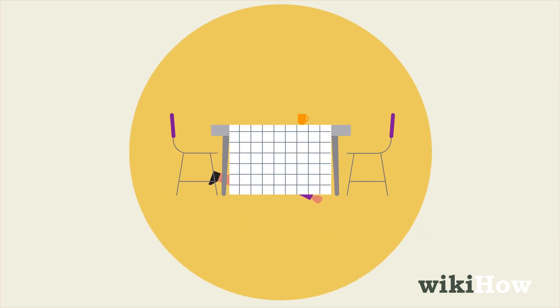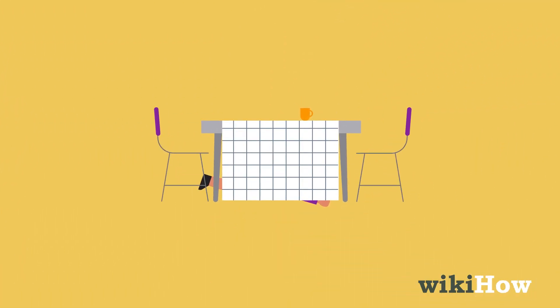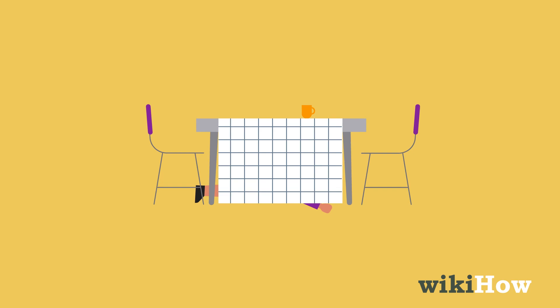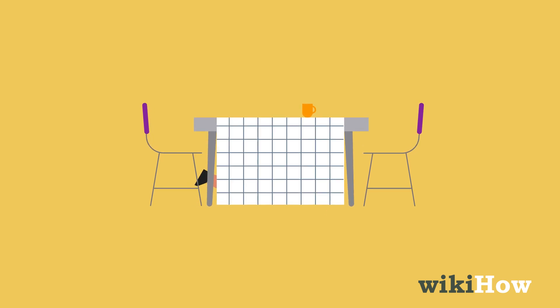Once you find a good hiding spot, try to make yourself as small as possible by crouching down and drawing your arms and legs in so the seeker doesn't see you poking out from your spot.